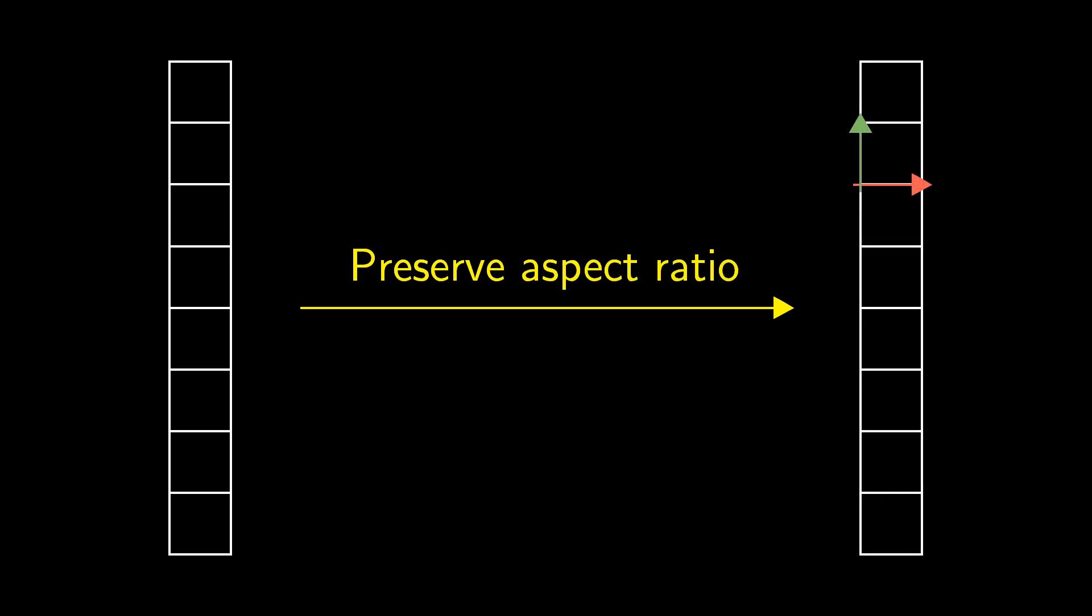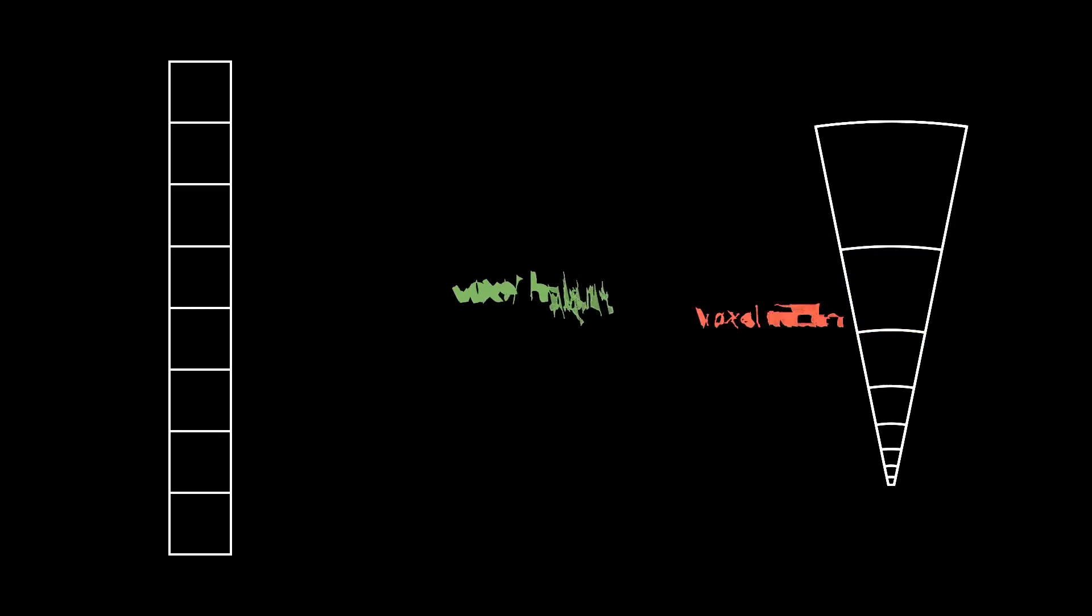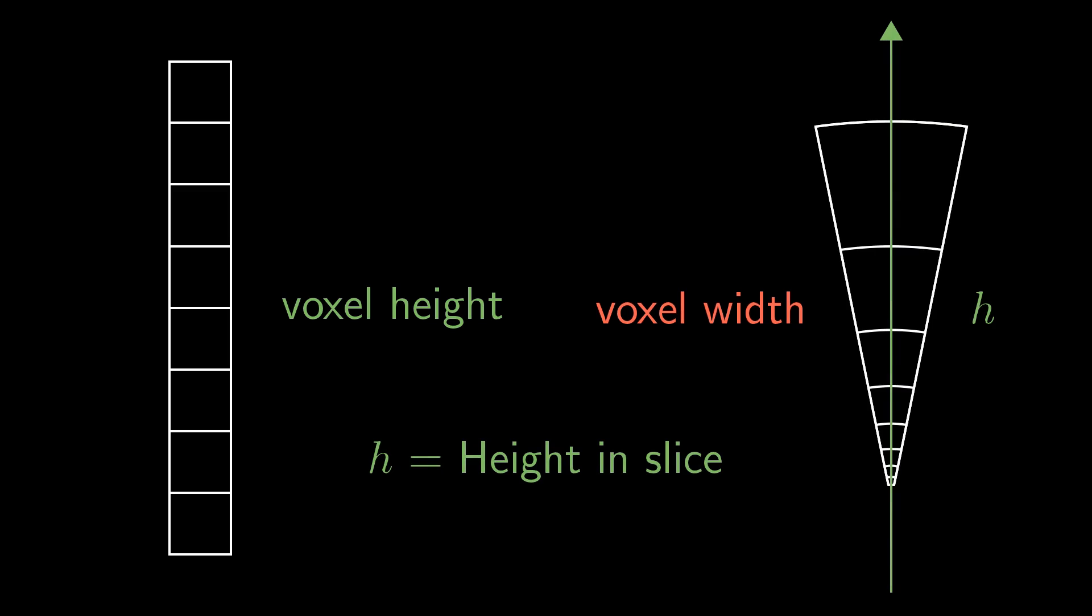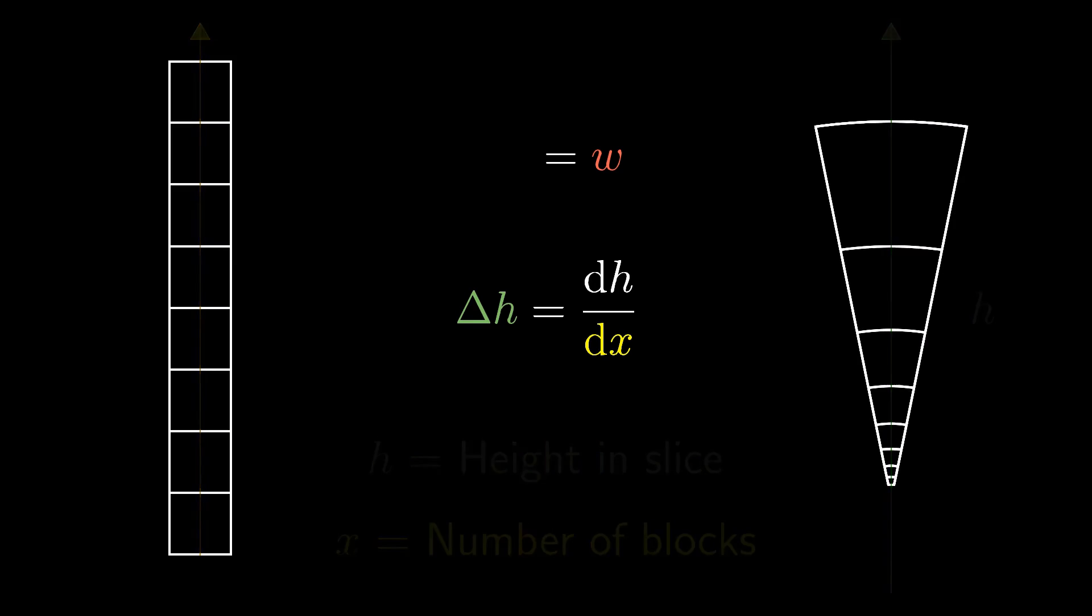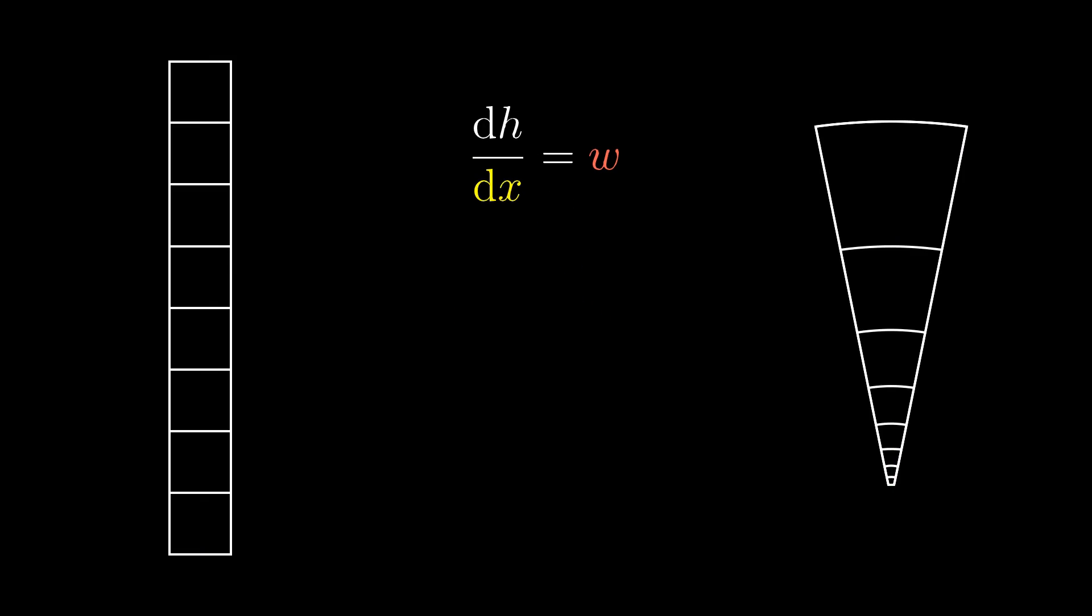In order to fix this we need a transformation that preserves the aspect ratio of the voxels. Using H as the height on the planet again we know that this condition is met if the height per block delta H equals the blocks with W. Since X is the height above the sea level it describes the number of blocks in the stack on the left. Delta H being the height per block can also be written as just that. The height dH per block dx. This gives us dH over dx equals W. But how do we know the width of any block W?